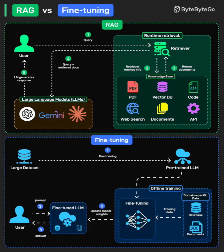What is fine-tuning? Now let's talk about fine-tuning — this is a completely different approach. Fine-tuning means taking a pre-trained LLM and continuing its training on your domain-specific dataset. You're literally updating the model's weights through offline training. You feed it your specialized data, whether that's databases, documents, or domain-specific examples, and the model learns patterns, terminology, and behaviors specific to your use case.